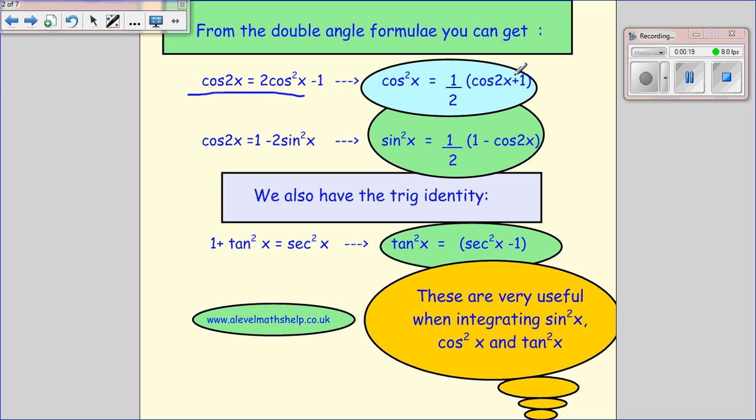You can rearrange it to get cos squared x, and you can also take this one and rearrange it to get sin squared x. So you need to be very comfortable with these two, either learning them or being comfortable at finding them very quickly.